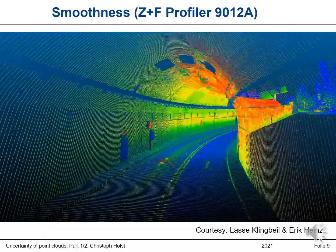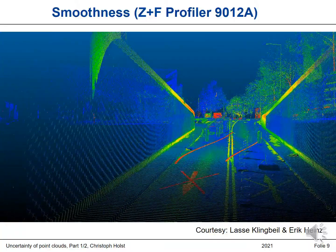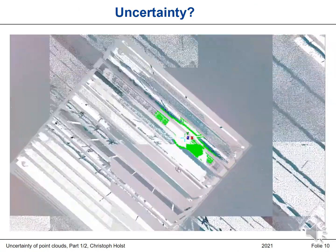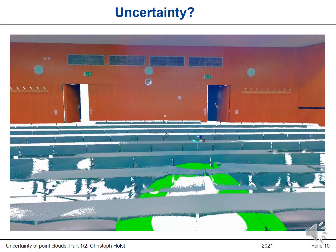But this is the wrong impression. Because in all the products I just showed, you can just see the smoothness. We can just see if there are any large noise effects, if the distance measurement is not that good. But we cannot say a lot about the angular measurements. We cannot say anything about whether there are systematic errors or a bias. If the width of the tunnel is correct, we don't see — we just see that the wall is quite smooth. We can only assess smoothness quickly when visually inspecting a point cloud.